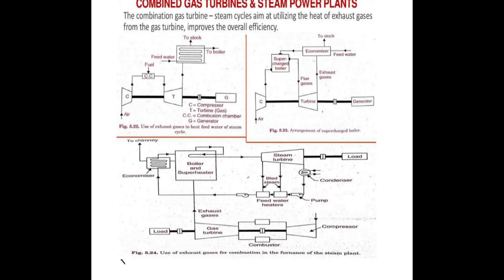In the combustion chamber, fuel and air are ignited, releasing hot gases. These hot gases drive the gas turbine, causing it to rotate. The gas turbine is coupled with an alternator, so when the gas turbine rotates, the alternator also rotates, producing AC power output.